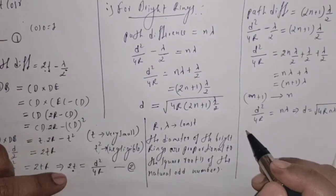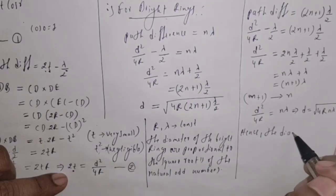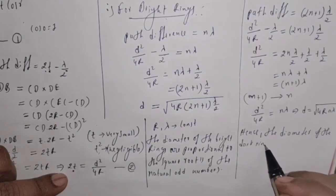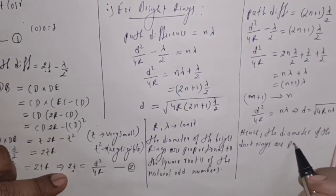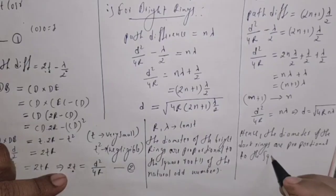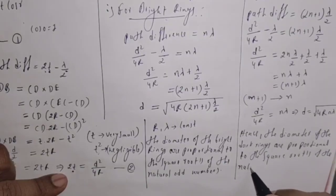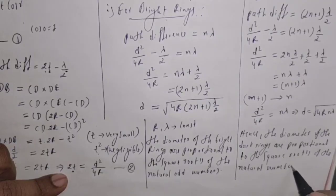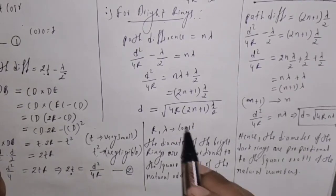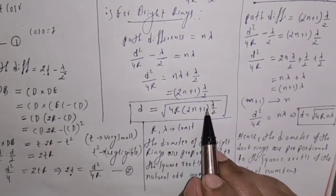Hence, the diameter of the dark rings is proportional to the square root of the natural numbers. This equation gives the diameter for dark rings, and the previous equation gives the diameter for bright rings. This is all about the theory of Newton's rings.